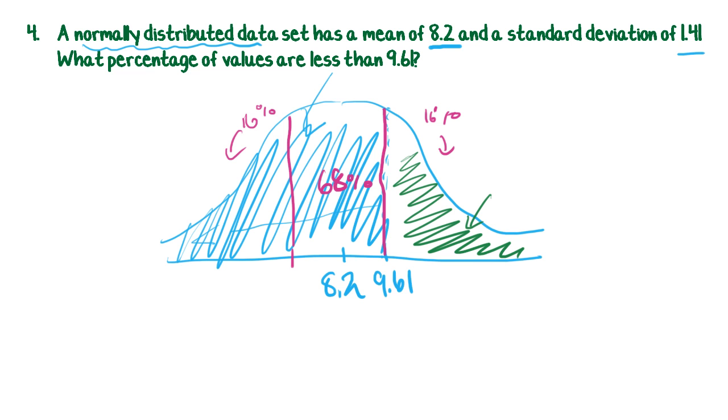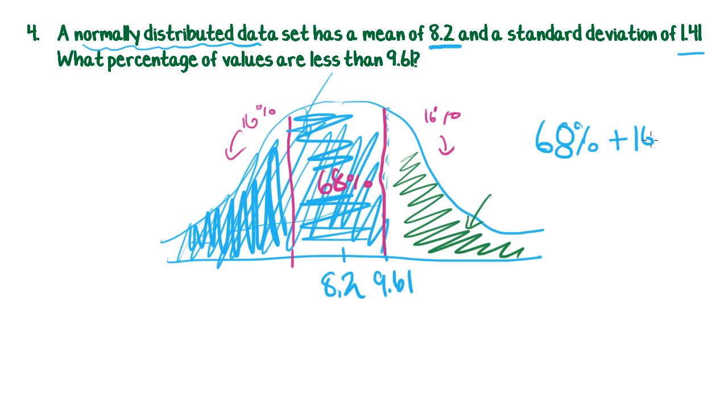So doing it this blue way, we would say, okay, well we've got 68% there, 68%, and we know we've got 16% in this bit, so we need to add those two together. So we would say 68% plus 16%, which is 84%, and that would be our answer.